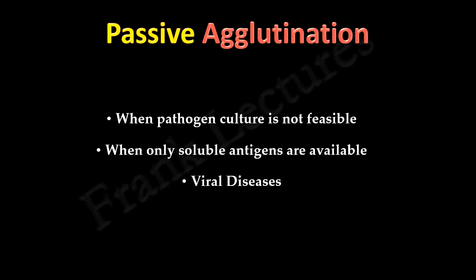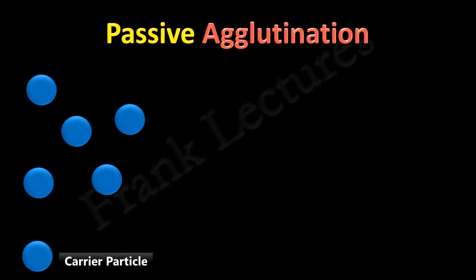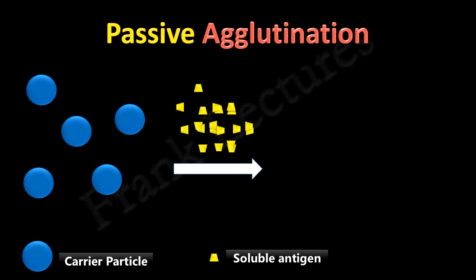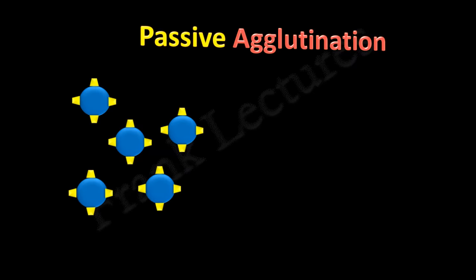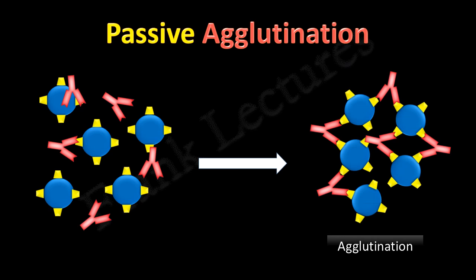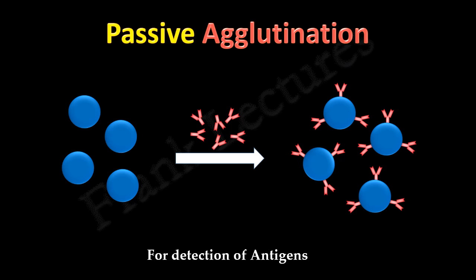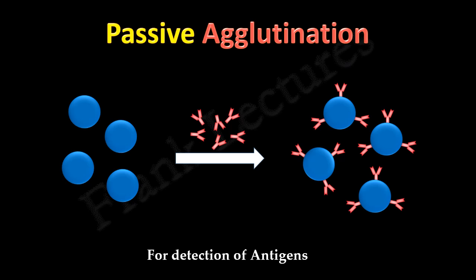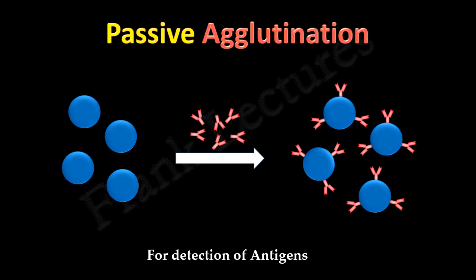For example, in viral diseases. The carrier particles — for example, latex beads — have soluble antigens of interest chemically fixed to them. Once carrier particles are coated with antigens of interest, the antibodies specific to these antigens are added. These antibodies react with the antigens and the particles agglutinate with one another. We can also detect antigens by passive agglutination by reversing the process: instead of coating carrier particles with antigens, they are coated with antibodies. This method is known as reverse passive agglutination.